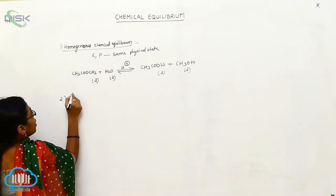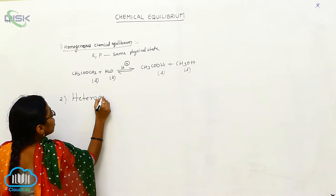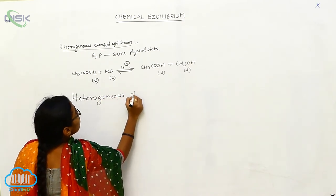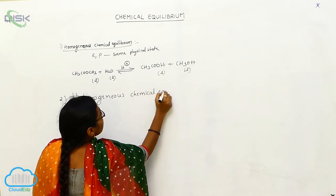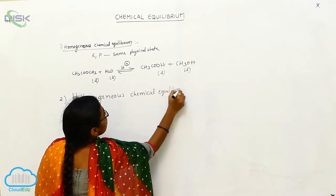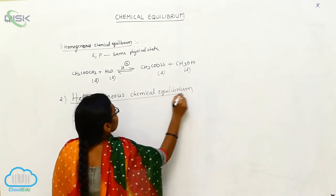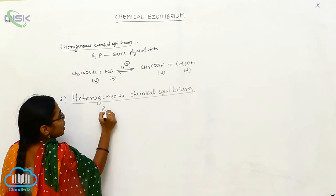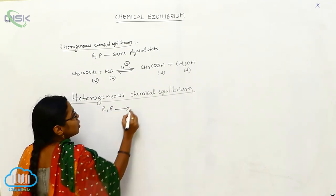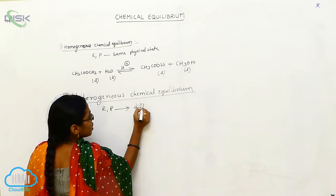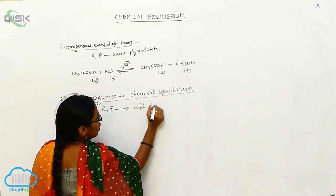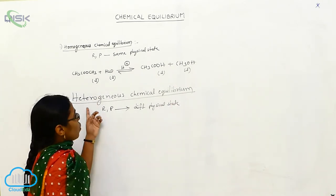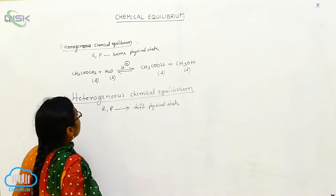Number two: heterogeneous chemical equilibrium. When the reactants and products are present in different physical states, that equilibrium is called heterogeneous chemical equilibrium.